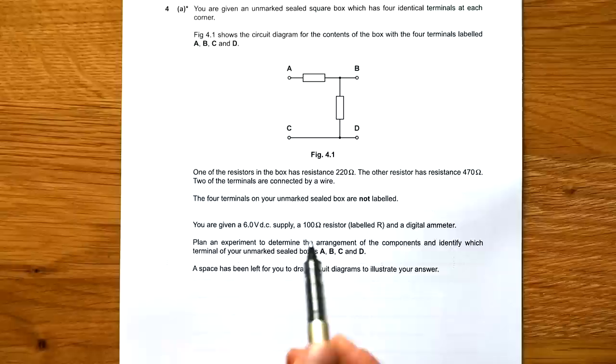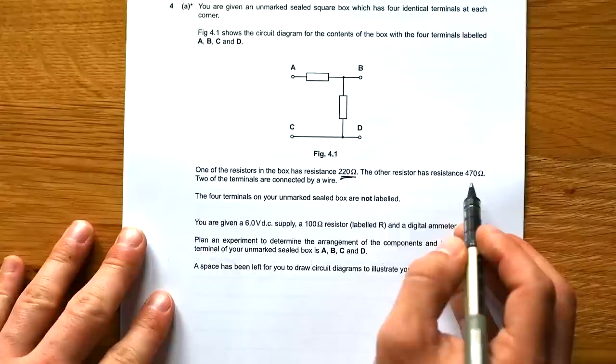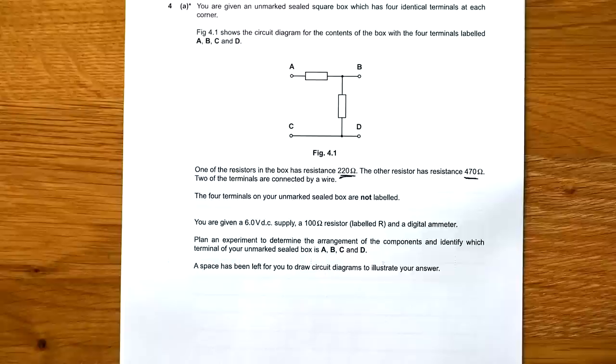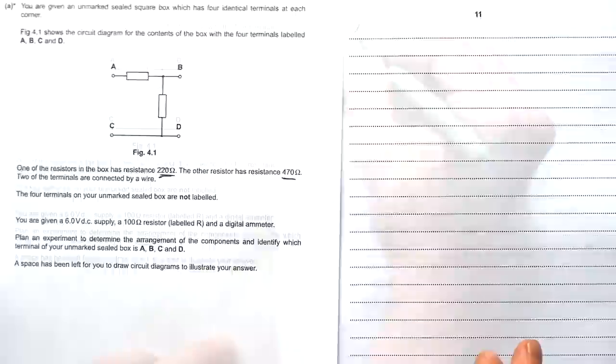Question 4: You were given an unmarked sealed square box which has four identical terminals at each corner. Figure 4.1 shows a circuit diagram for the contents of the box with the four terminals labelled A, B, C, D. One of the resistors in the box has a resistance 220 ohms. It's a puzzle. The other resistor has a resistance 470 ohms. Four terminals on your unmarked sealed box are not labelled. You're given a 6 volt supply, 100 ohm resistor labelled R, and a digital ammeter. Plan an experiment to determine the arrangement of the components to identify which terminal of your unmarked sealed box is A, B, C and D. So let's find out C and D first.